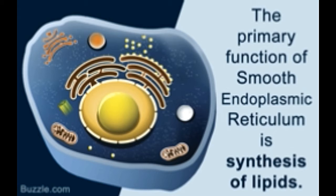The endoplasmic reticulum that does not have ribosomes attached to its surface is known as smooth endoplasmic reticulum. The main difference between rough endoplasmic reticulum, RER, and smooth endoplasmic reticulum, CER, is that RER is studded with membrane-bound ribosomes, while CER lacks this organelle.